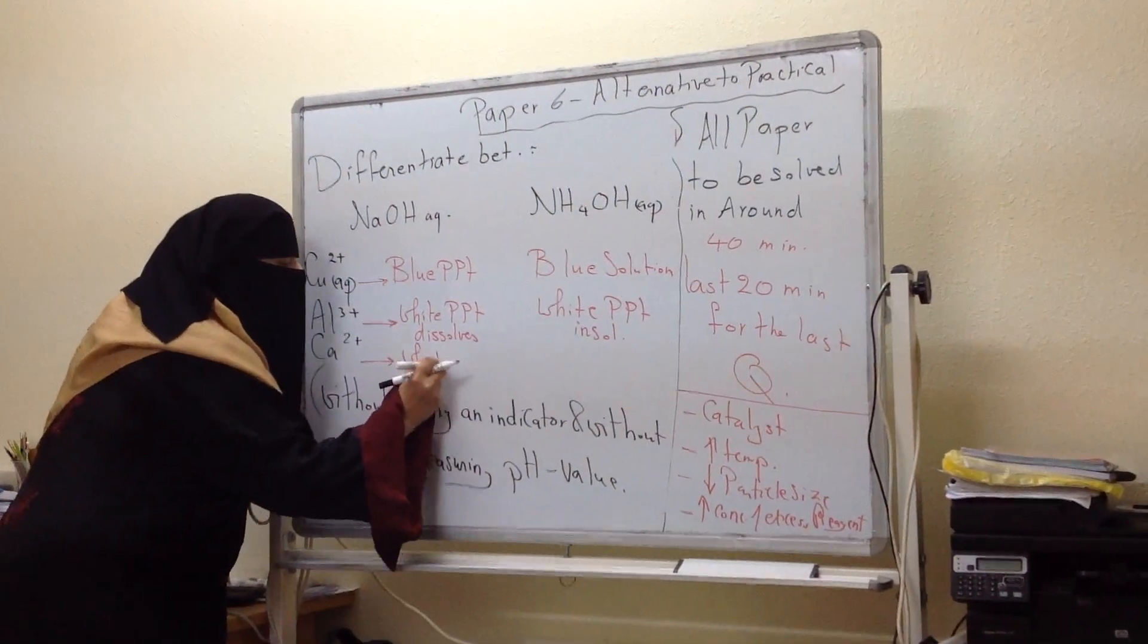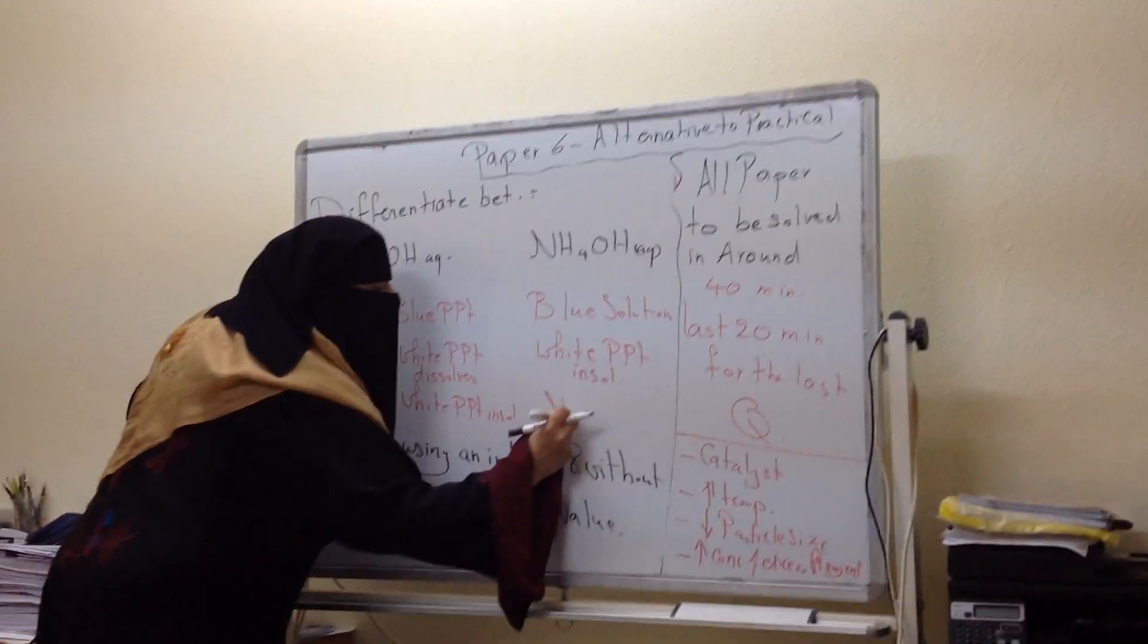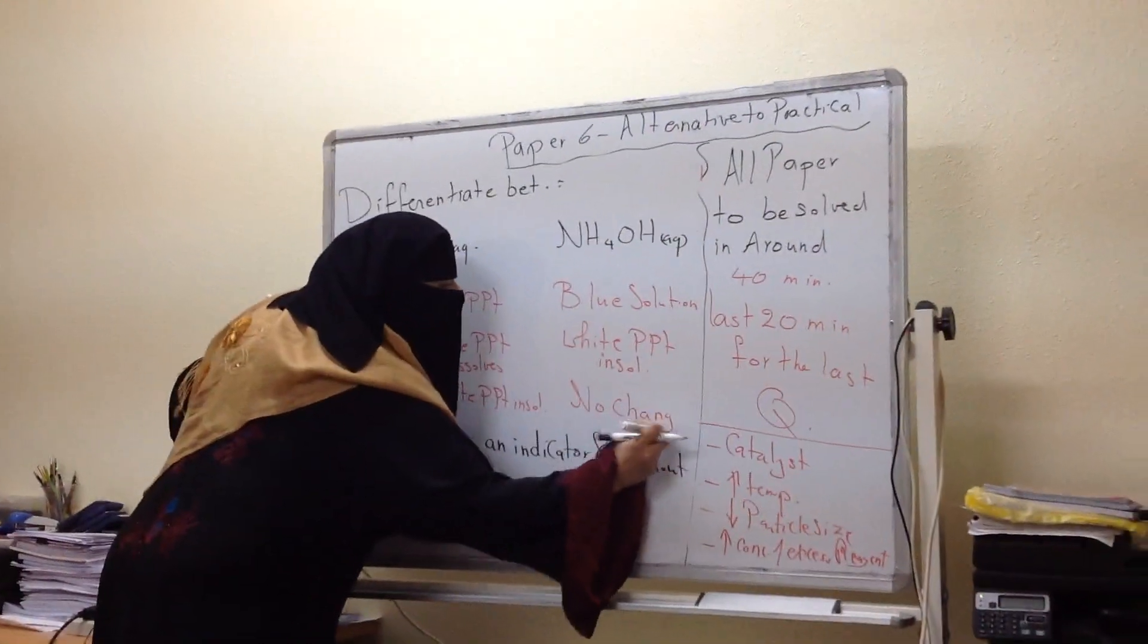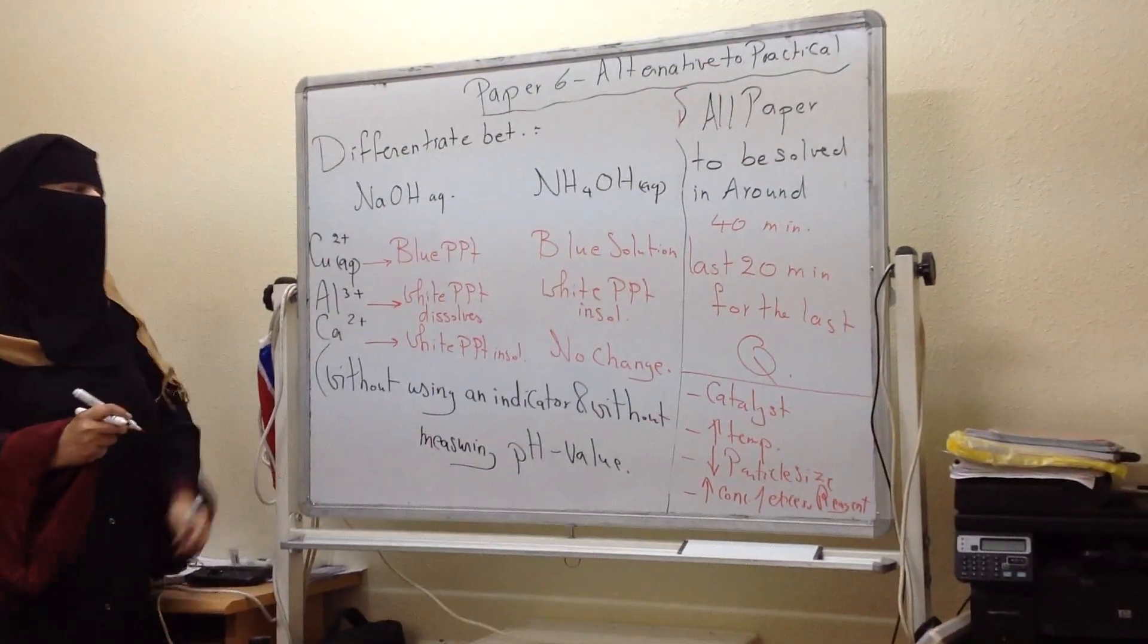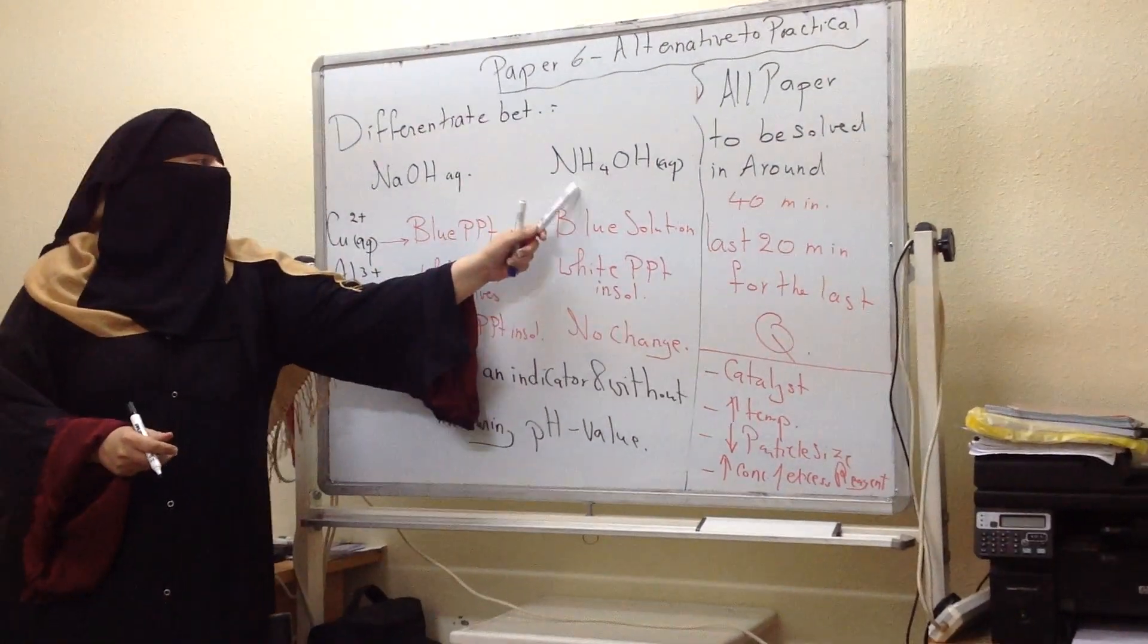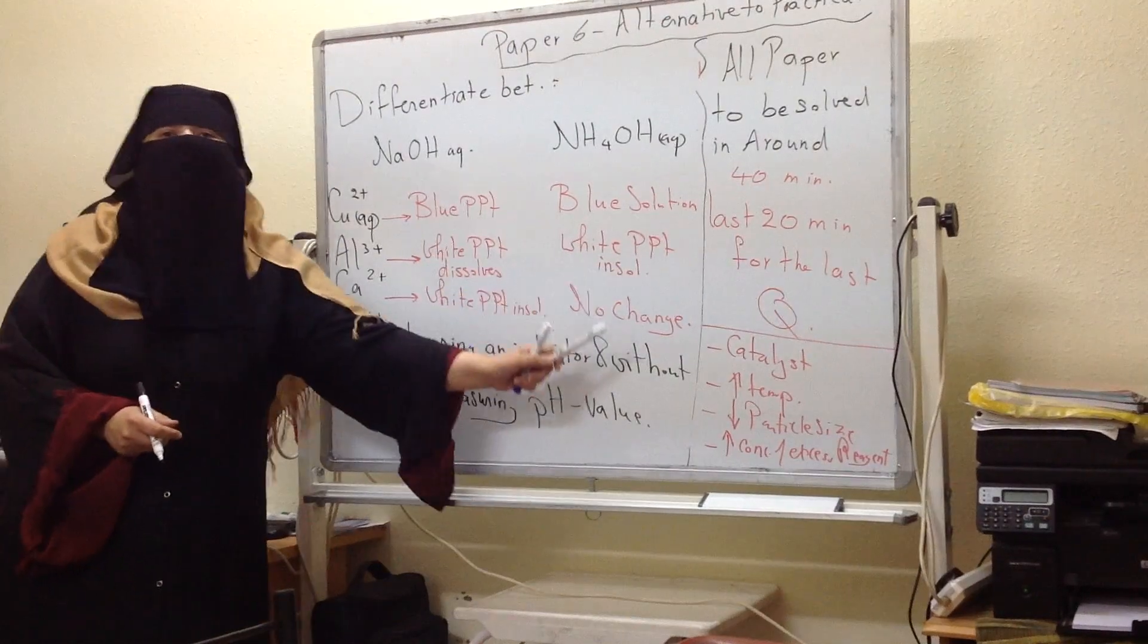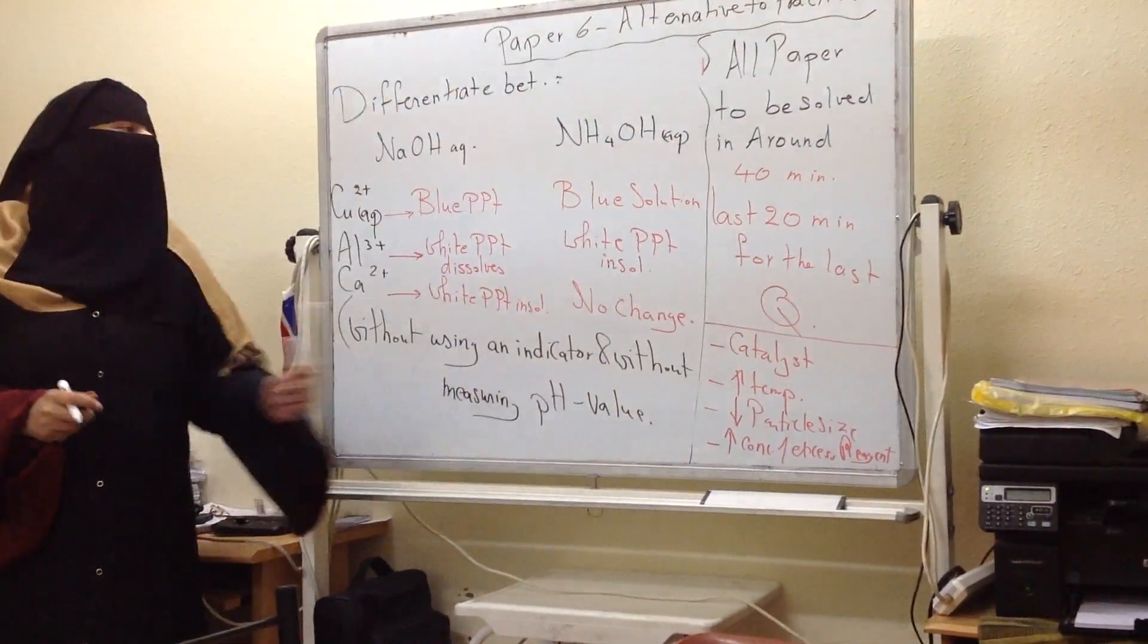White precipitate insoluble in excess of ammonia. With calcium, it will give me with sodium hydroxide white precipitate insoluble in excess. But with ammonia, no change, no reaction, no precipitate or slight precipitate. So to differentiate between sodium hydroxide and ammonium hydroxide, I can use tests for cations to differentiate between them without using indicator or pH value.